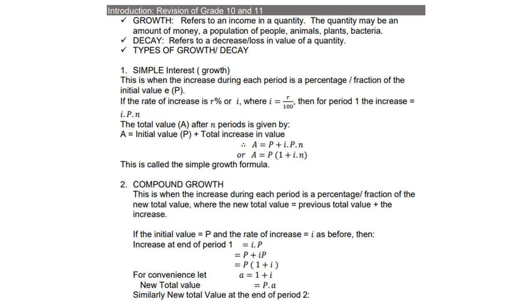The first type is simple interest, which is growth. This is where the increase during each period is a percentage or fraction of the initial value. If the rate of increase is r percent, then i equals r over 100. The total value A after n periods is given by A = P + i·P·n, which simplifies to A = P(1 + in). This is called the simple growth formula.